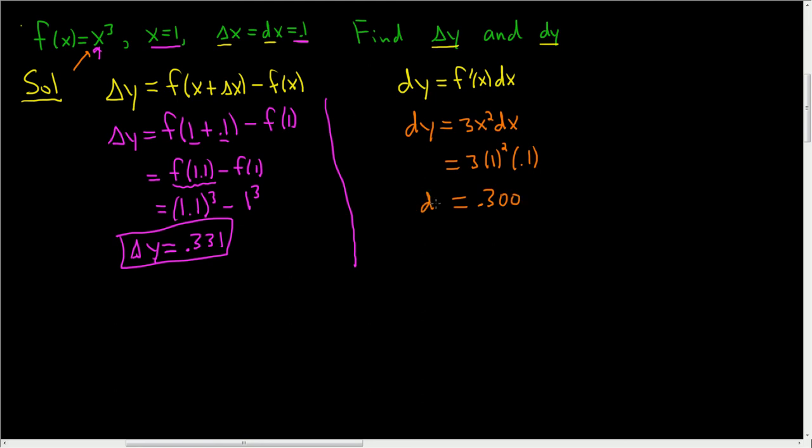So there is dy. Why am I using three decimals? The original problem wanted us to use three decimals. So again, it's all about knowing these two formulas. This formula gives you delta y, and this formula gives you dy. Very easy stuff.